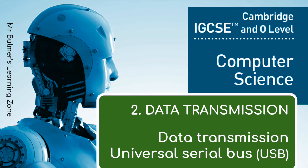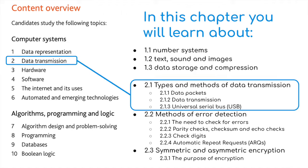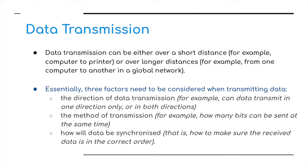Welcome back to Cambridge IGCSE Computer Science and the second video to support chapter 2, data transmission. We're going to follow on from the last video where we talked about data packets, and this time we're going to look at methods of data transmission and also cover USB, the Universal Serial Bus. Data transmission can be either over a short distance, for example computer to printer, or over a long distance, for example from one computer to another in a global network.